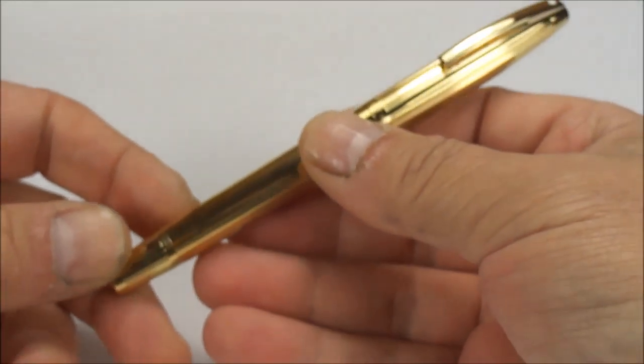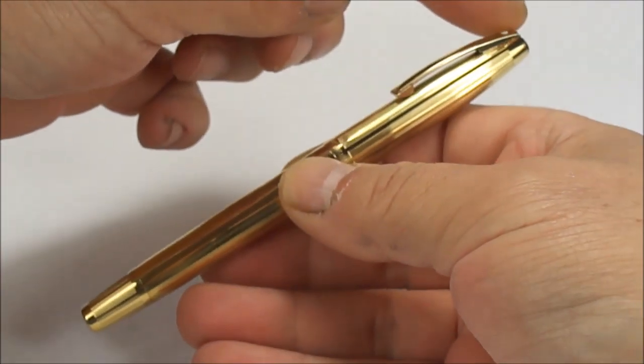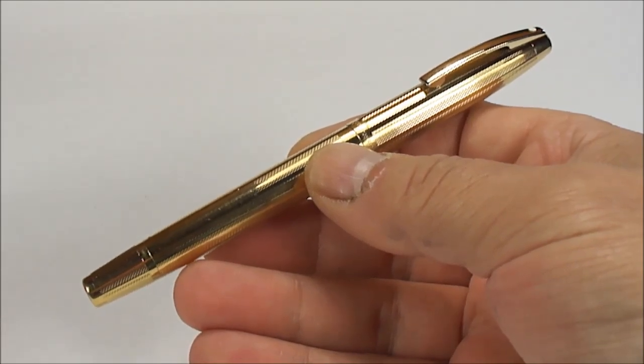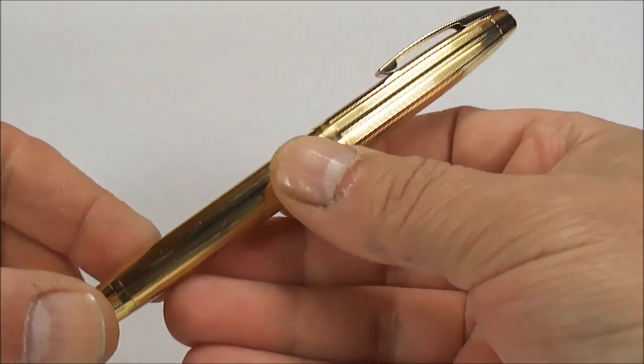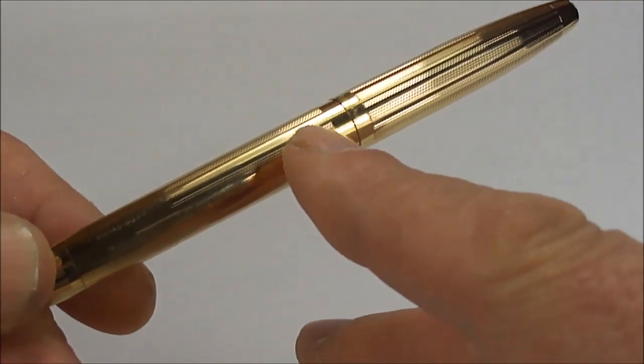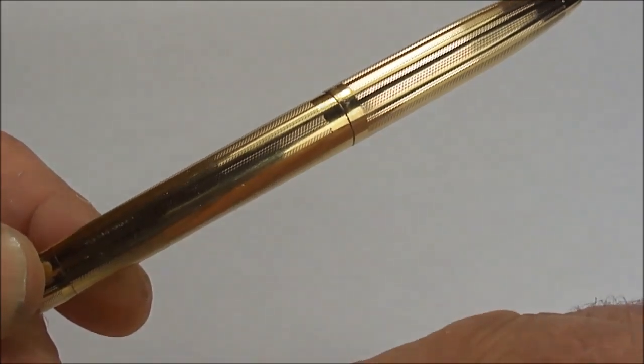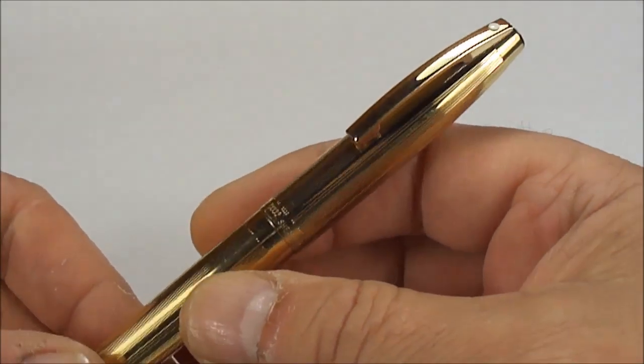Now the size of this pen from the top of the cap to the bottom of the barrel is approximately 137 millimeters capped. The diameter of the barrel around here is approximately 11.5 millimeters in diameter.